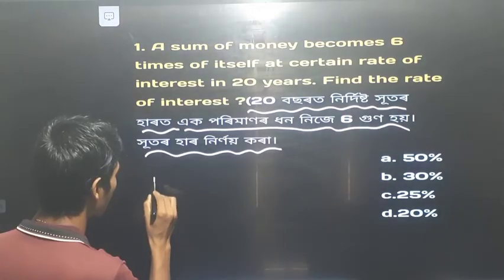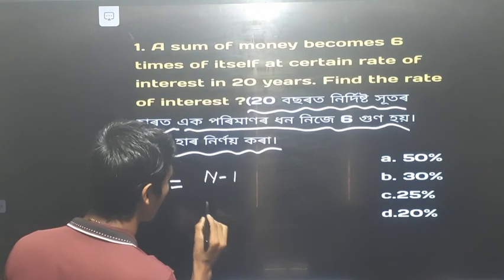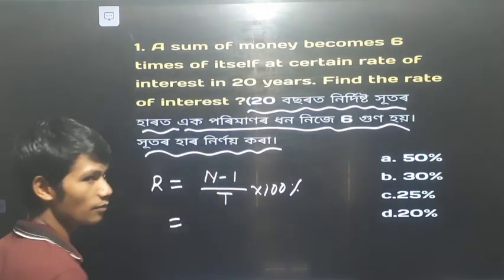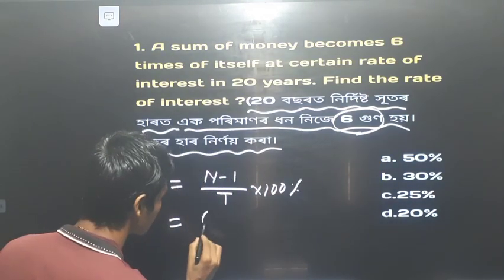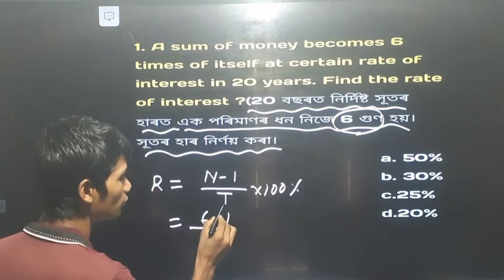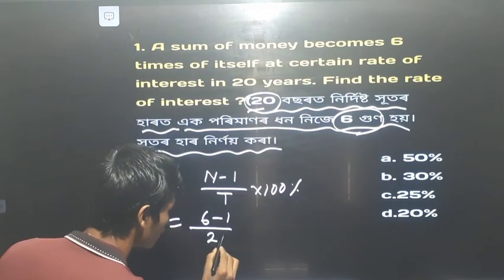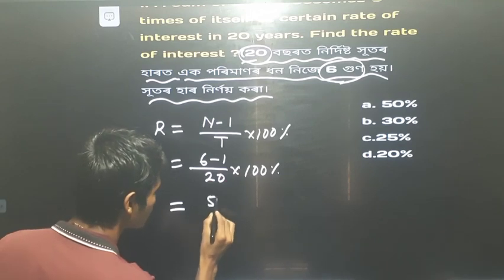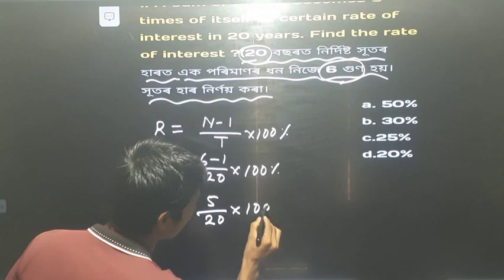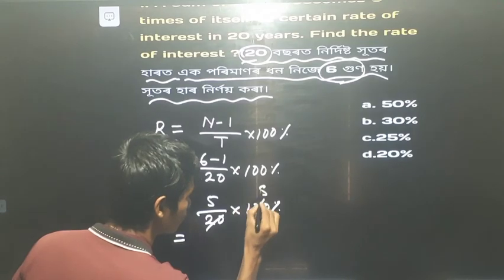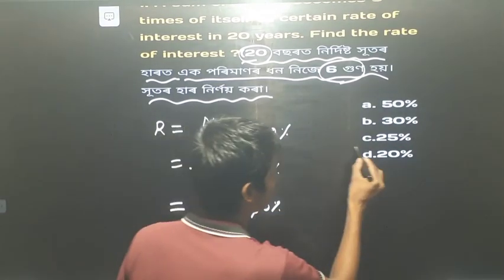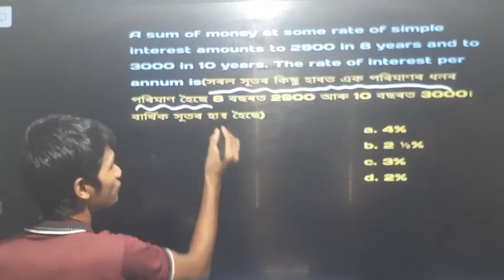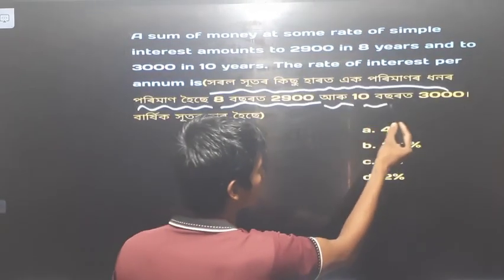The rate of interest is equal to r, which equals n minus 1, divided by t, into 100. This is the percentage formula for the rate of interest: r = (n - 1) / t × 100.